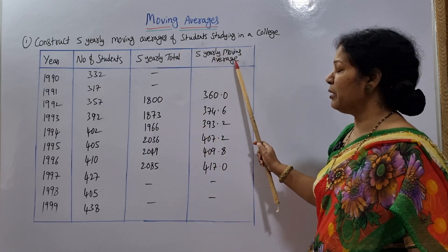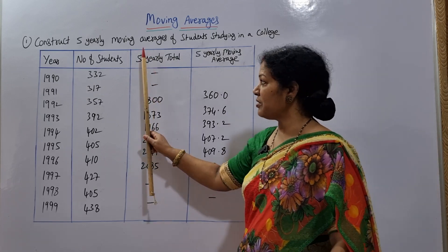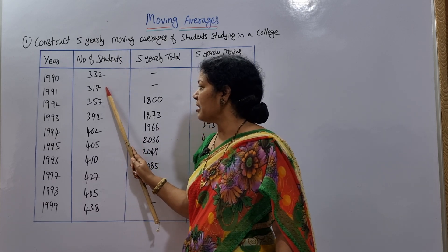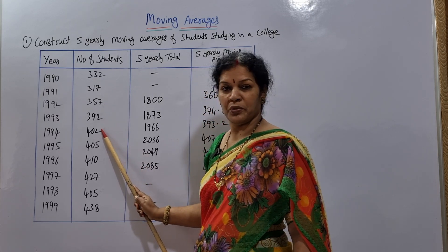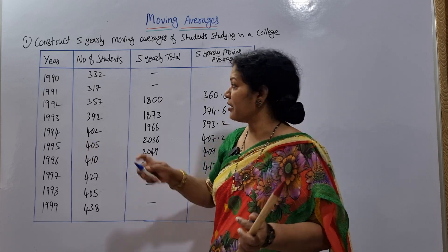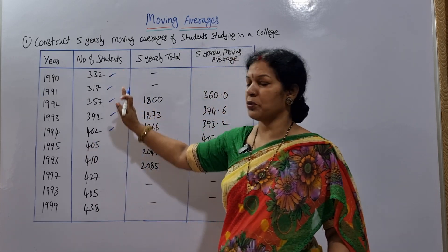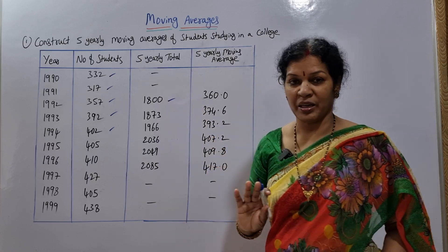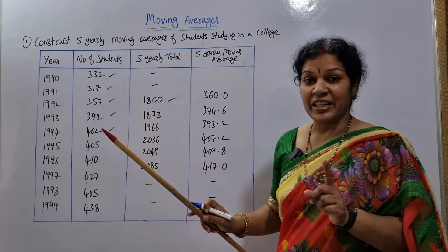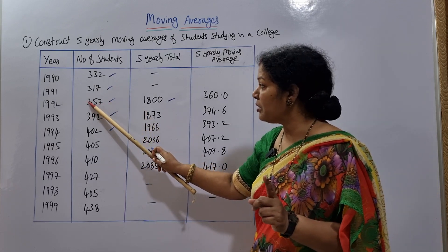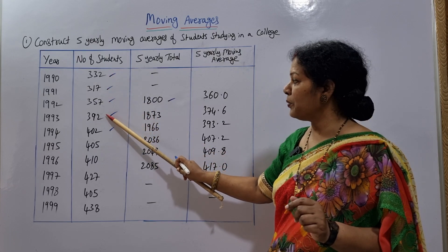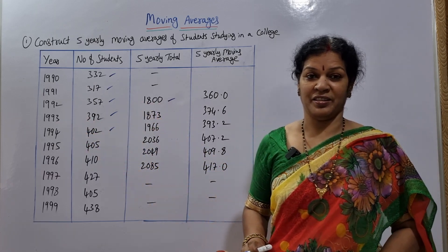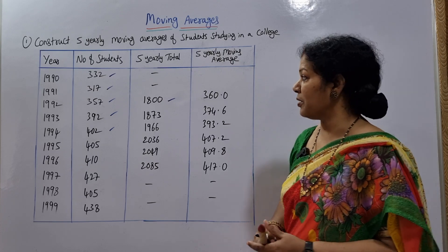This is the data given to us. For the five-year total, we take the first five values: 332, 317, 357, 392, and 402. Adding these up gives 1800. Now where do we post the 1800? Opposite to the middle number — one, two, three, four, five, so three is the middle — we post 1800 exactly opposite to that middle year.